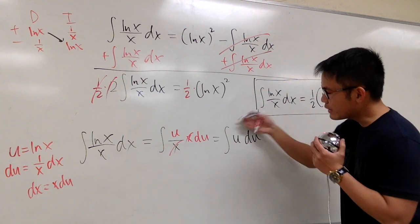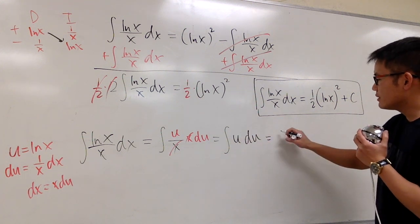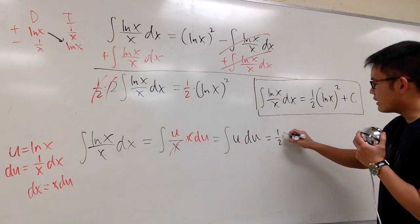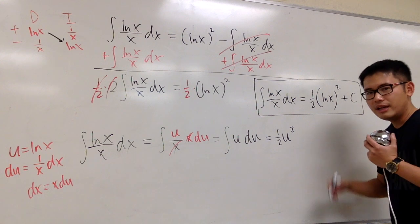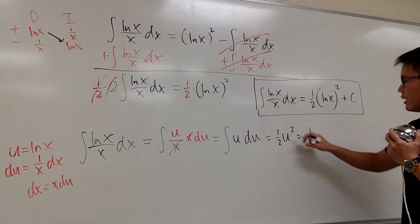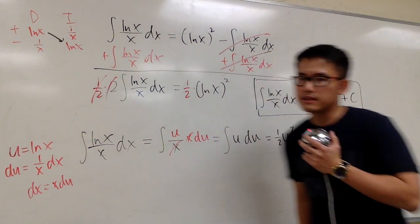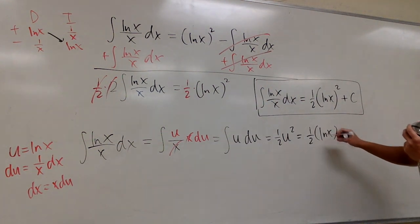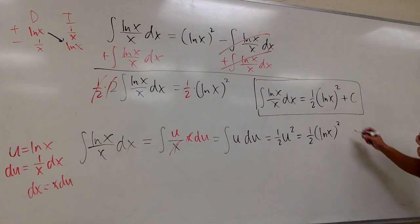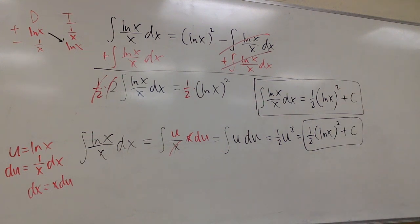And then this is, you add 1, divide by 2. Add 1 to the exponent. Divide by 2, like 1 half u to the second power. At the end, you go back to the x world. So this is 1 half. Let me open the parentheses for the u, which is ln x. In the parentheses, raised to the second power. And then we are also done. Which one did you like better?